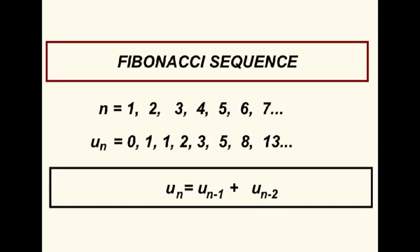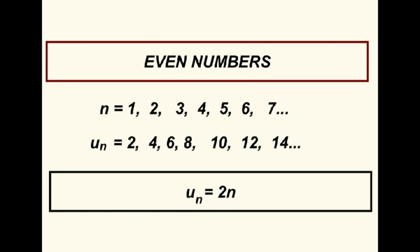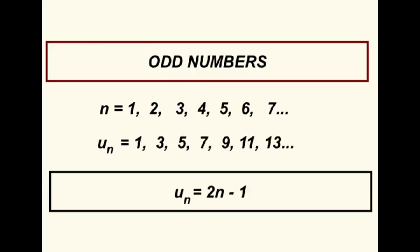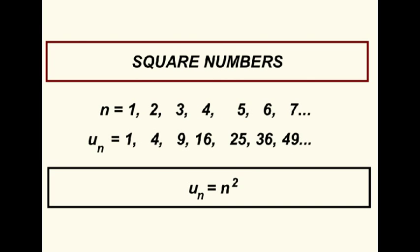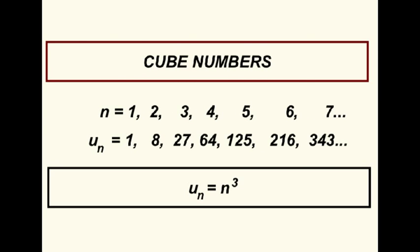Here are some other important sequences. The even numbers are obtained by multiplying each natural number by two. The odd numbers are obtained by multiplying each natural number by two and subtracting one. The square numbers are obtained by multiplying each natural number by itself. The cube numbers are obtained by cubing each natural number.